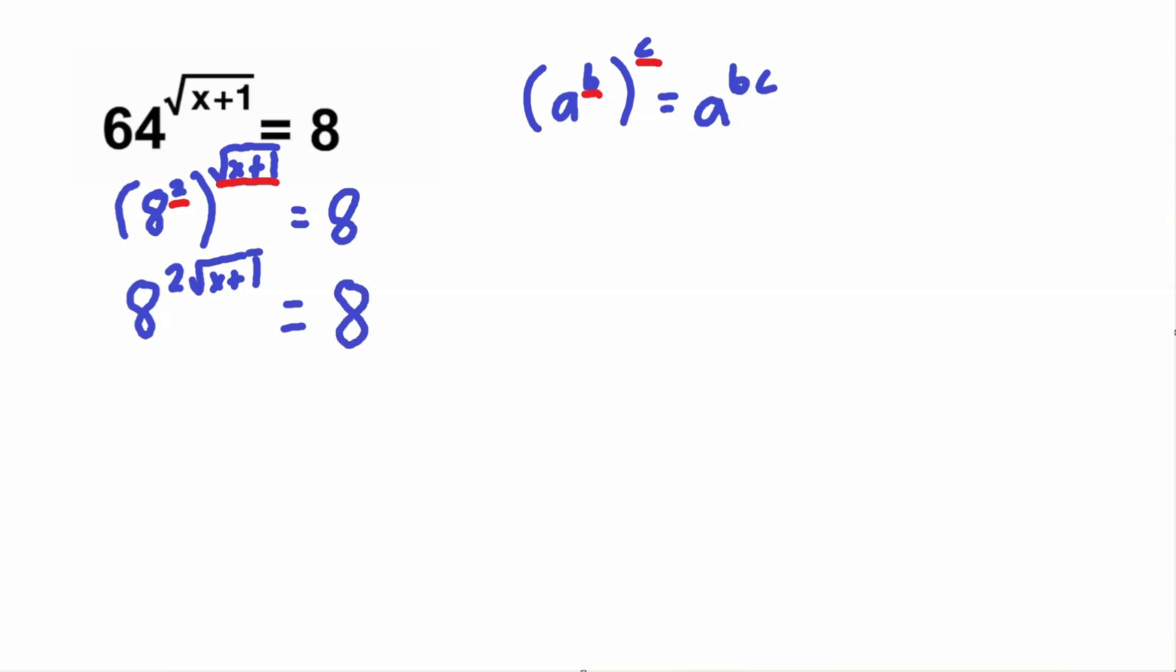So now we have the same bases. 8 and 8, these are the same bases, so that means the exponents have to be the same. We know we have the exponent here with the variable, square root of x plus 1. But what is the exponent of 8 with no exponent? When we don't see an exponent, that means the exponent is actually just 1. So now since we have the same bases, we can drop the bases and this equation simply becomes 2 times square root of x plus 1 is equal to 1.